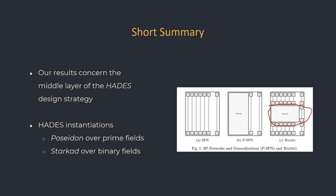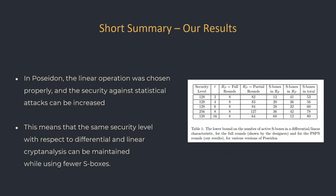Specifically, we consider the instantiations of the Hades design, which are Poseidon and Starkad. For Poseidon, we show how an analysis of the middle layer can be used to increase the security guarantee against statistical attacks. For some of the Poseidon variants, the middle layer provides even better security against statistical attacks than the full rounds.